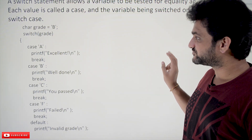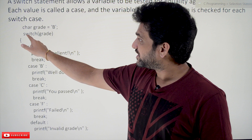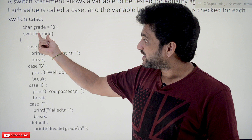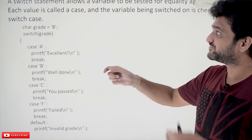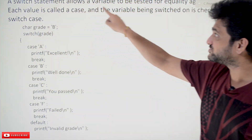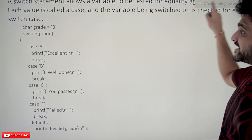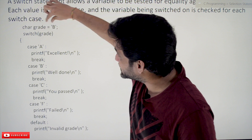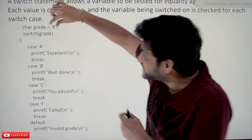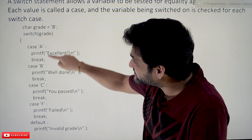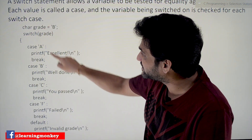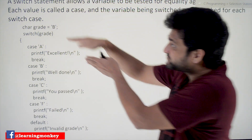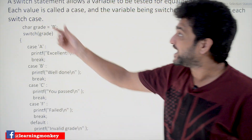This is the syntax of the switch statement. 'switch' is the keyword and it is assigned with a variable. The switch statement allows a variable to be tested for equality against a list of values. So the value of the variable — here it is assigned as 'B' — is tested with a list of values such as A, B, and F.